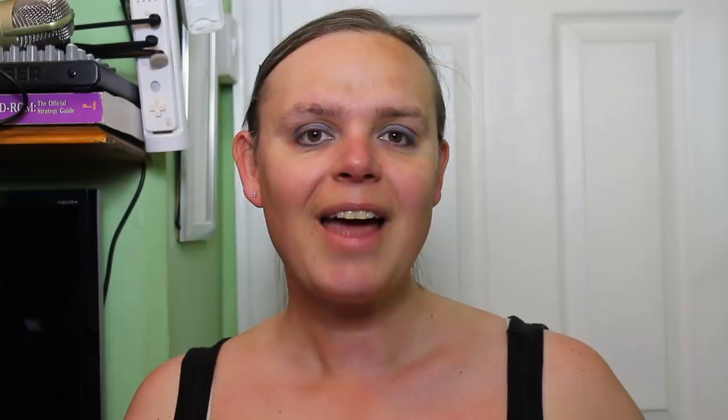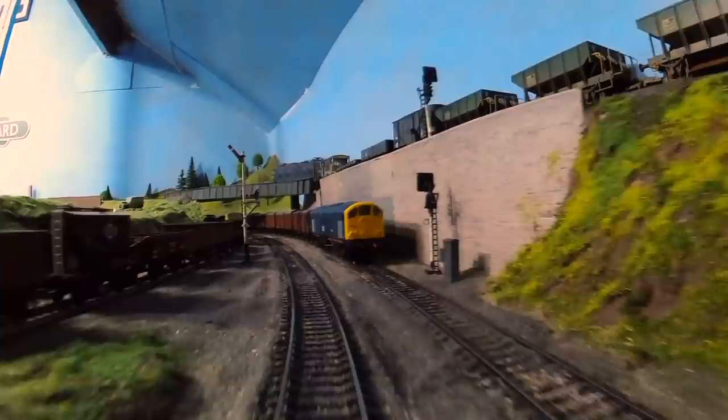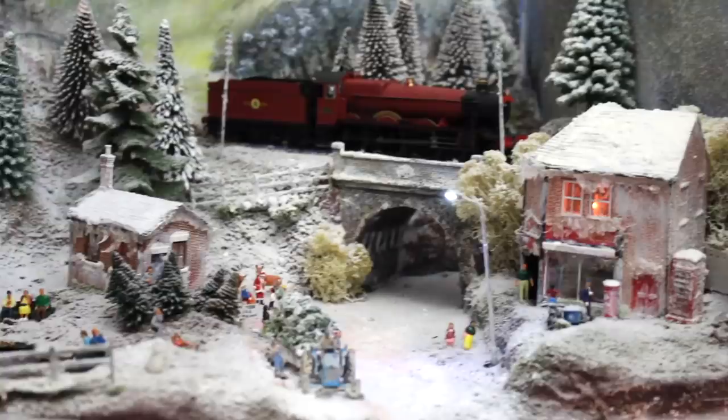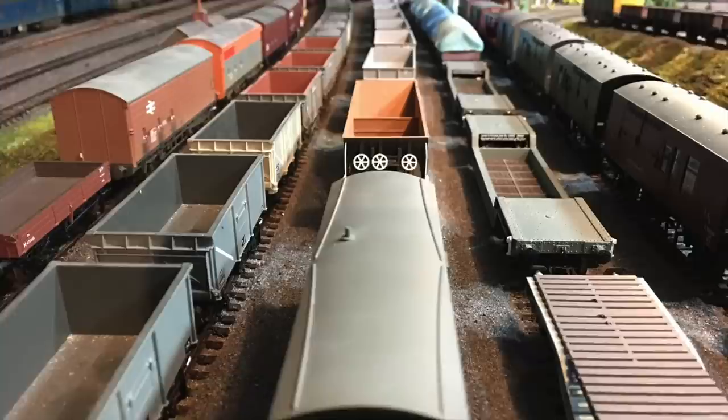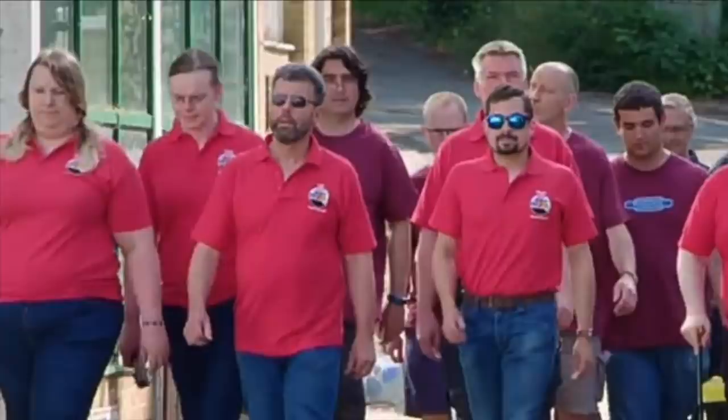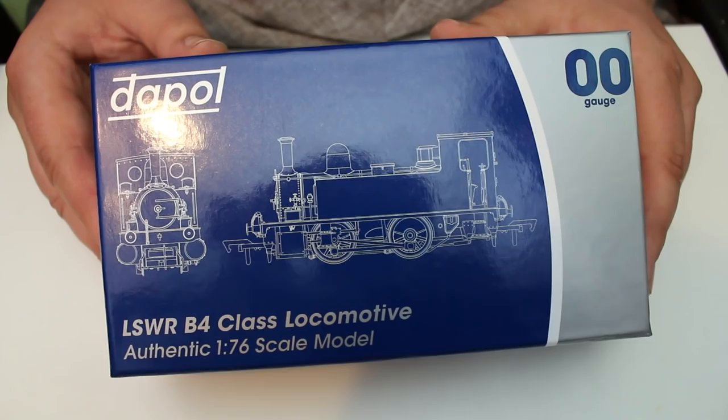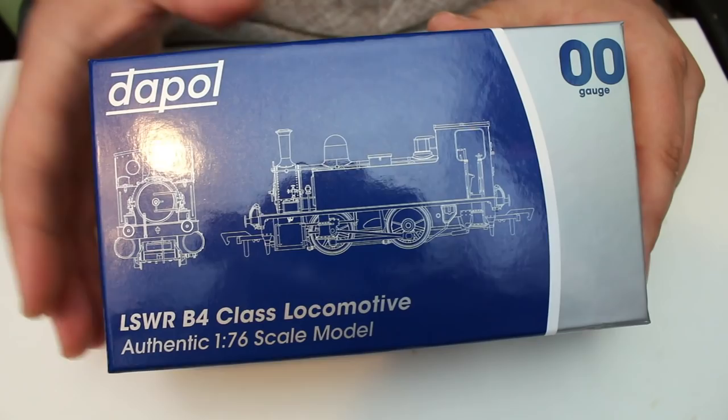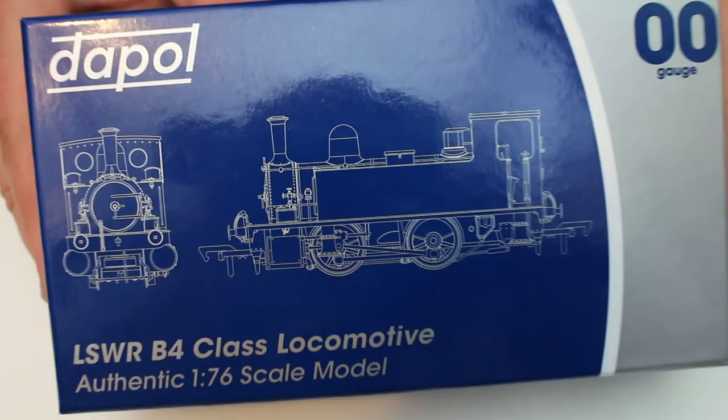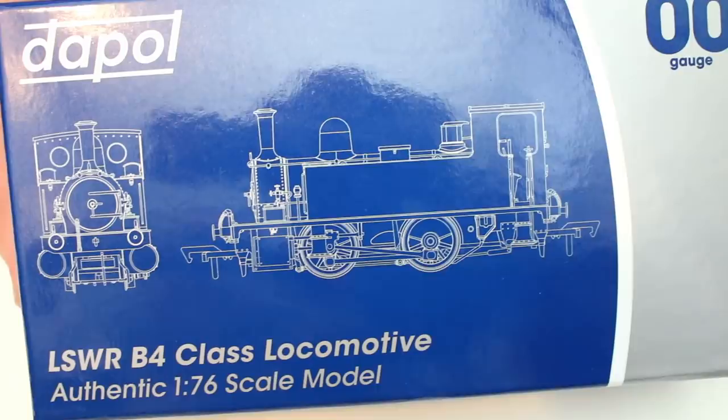But without further ado, let's head on in and take a closer look. Here's today's model - a Dapol London and South Western Railway B4 class locomotive, the dock tanks. These locomotives are probably most famous for their work in Southampton docks where they ran for a good length of time, right up until they were replaced by the USA dock tanks, which in turn were replaced by the class 7 diesel shunters.